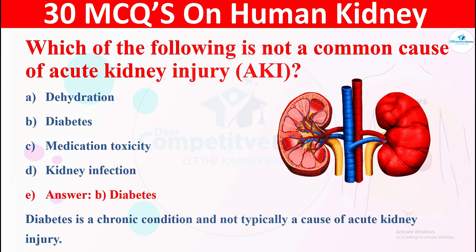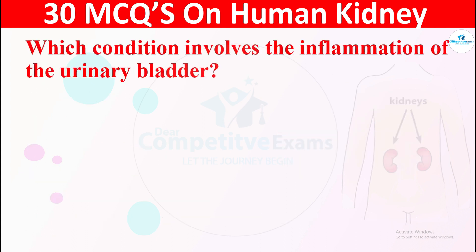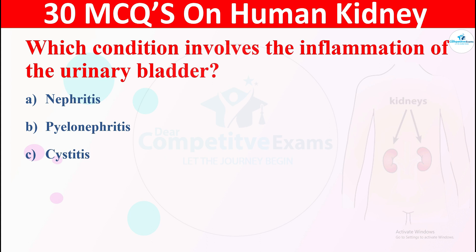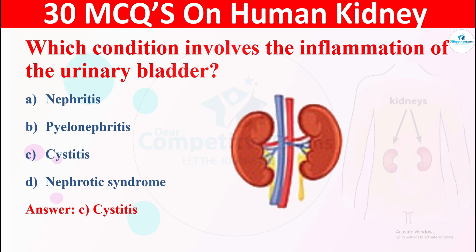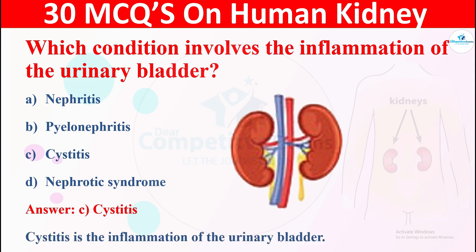Question 27: Which condition involves the inflammation of the urinary bladder? Options are: A) nephritis, B) pyelonephritis, C) cystitis, or D) nephrotic syndrome. The right answer is cystitis. Cystitis is the inflammation of the urinary bladder.